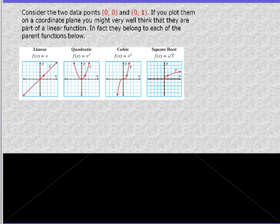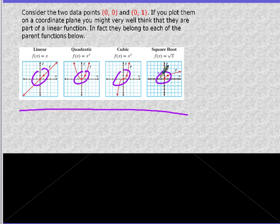Consider the two data points 0, 0 and 1, 1. If you plot them on a coordinate plane, you might think they are part of a linear function. In fact, they belong to each of the parent functions. These are the ones we're going to concentrate on, and you can see these two points belong in all of our parent functions. Sometimes that's going to help you, sometimes it hurts you.